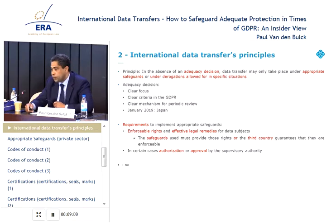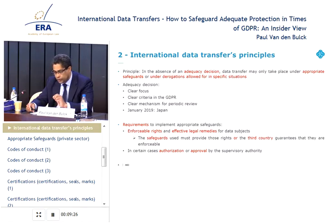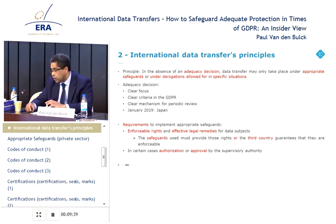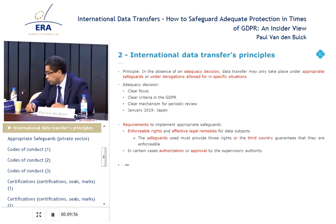Concerning the improvement regarding appropriate safeguards, one of the main improvements brought by the GDPR — also coming from the Schrems case — is Article 46.1. It's a new condition: enforceable rights and effective legal remedies. This condition means that the safeguard used must provide those rights, and the third country must guarantee that those rights are enforceable. In other words, the mere use of an appropriate safeguard is not enough if those rights are not guaranteed by the third country.